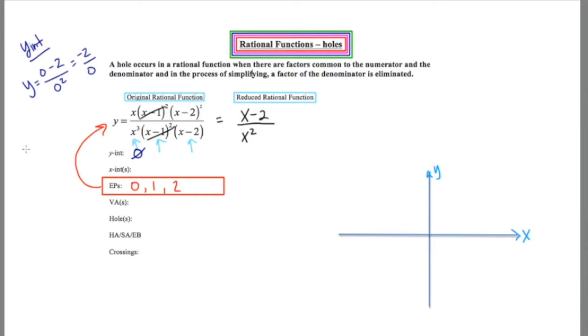X-intercept, we're supposed to set the numerator equal to zero. So we get (x - 2) equals zero, or x equals two, giving us the ordered pair (2, 0). And this came from a factor which happened one time. So it's going to be a pass-through.